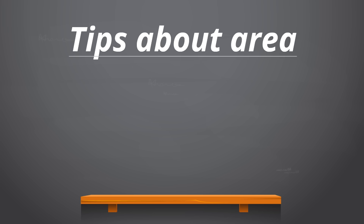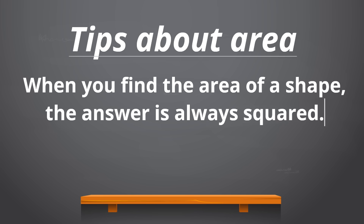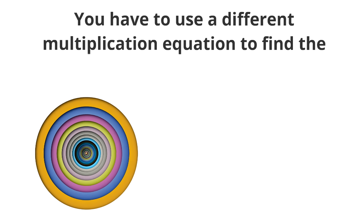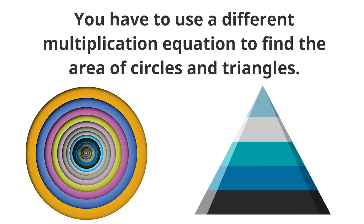As we are wrapping up, we want to share two quick tips about area. When you find the area of a shape, the answer is always squared. If the area of a shape was measured in feet and the answer was 50, our answer could be written 50 square feet or 50 feet squared. The answer is always squared because area tells us how much space is inside a shape — the little 2 means squared. Second, you have to use a different multiplication equation to find the area of circles and triangles. In this video, we just learned the basics of area and how to find the area of rectangles and squares, but this is just the beginning of an exciting math world. There is so much more about area to learn.